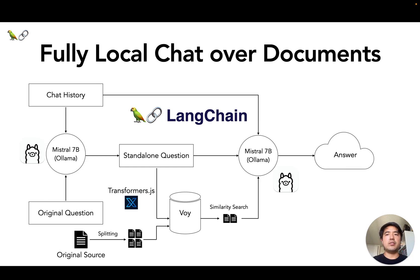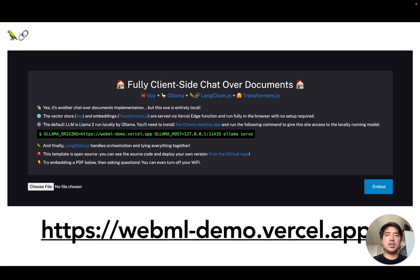Here's a quick outline of the specific OSS pieces I used for my fully local chat over documents chain: a new state-of-the-art small LLM called Mistral, run using a handy tool called Ollama; Xenova's Transformers.js to load a Hugging Face embeddings model; and a neat open-source WebAssembly vector store called VoI. I actually shipped a live version of this on Vercel as a Next.js app. You can try it for yourself at webml-demo.vercel.app, but I'll quickly show off how it looks now live.